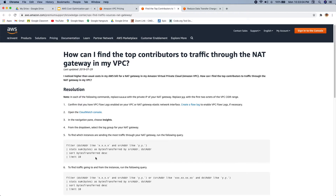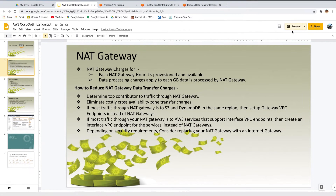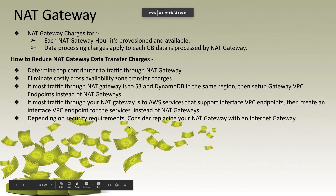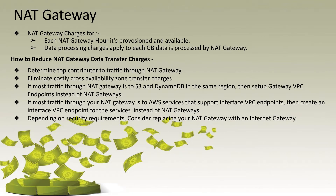Once you have that data, you can ask yourself what kind of data is being processed. If your application is making a lot of calls to S3 or DynamoDB in the same region where your private subnet is, instead of using NAT gateway, you can simply use the Gateway VPC endpoint. That way you stop paying any data processing charges for that traffic through the NAT gateway.